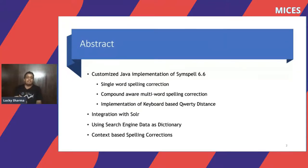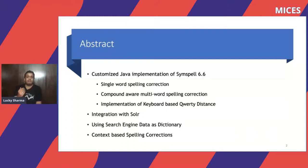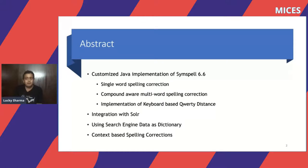We have integrated SIM spell into Solr and created a component so it can be easily used, which allows us to use search engine data as a dictionary. With any spell correction, you need to provide a dictionary. If you have a new brand in your catalog and someone misspells it, it won't get auto-corrected unless the word is in the dictionary. With this Solr integration, we can read the index data and rebuild the dictionary on every commit or reload operation.